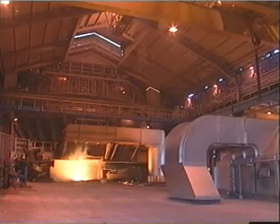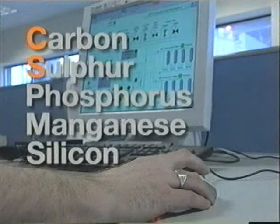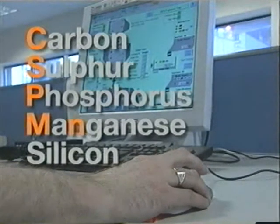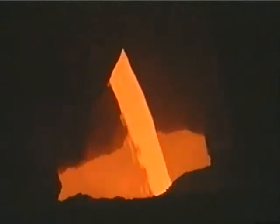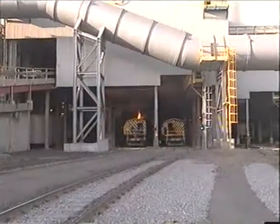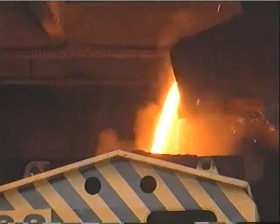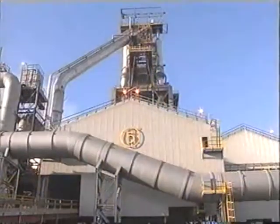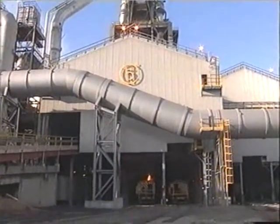The molten iron we get from a blast furnace, or hot metal as it's known in the industry, isn't pure iron and contains the elements carbon, sulphur, phosphorus, manganese and silicon. To make steel, these elements must be removed or reduced, and other elements added, depending on the type of steel being made. The carbon content, at about 4%, makes iron very brittle and unsuitable for rolling or forging, and although iron can be used for castings, most of the iron produced is for processing into steel.